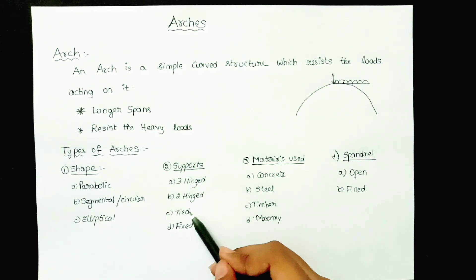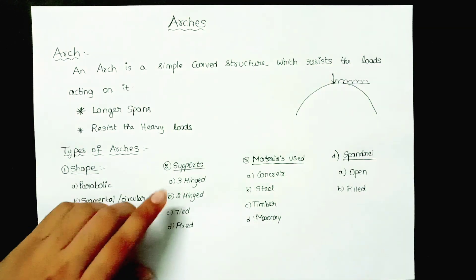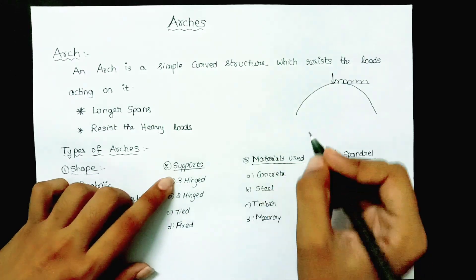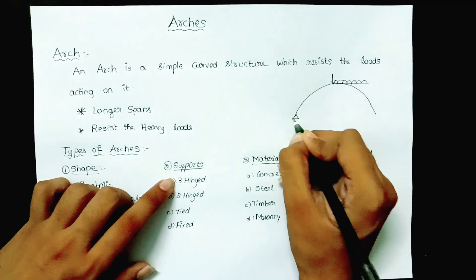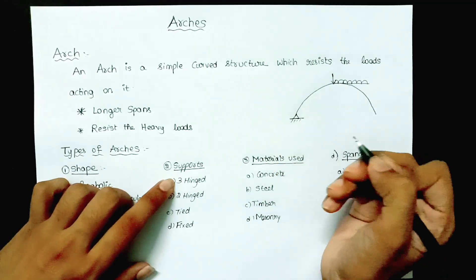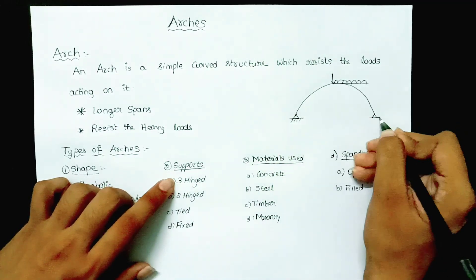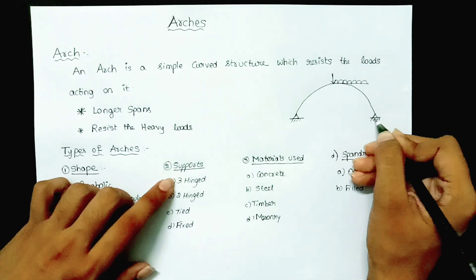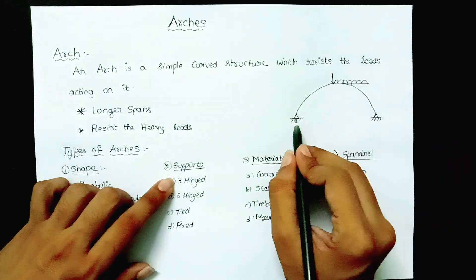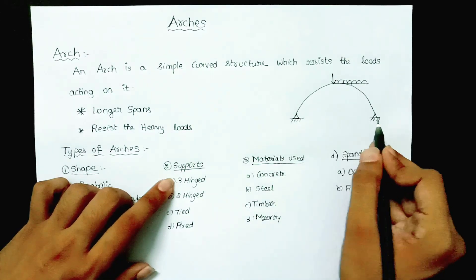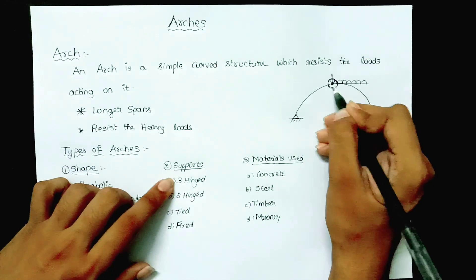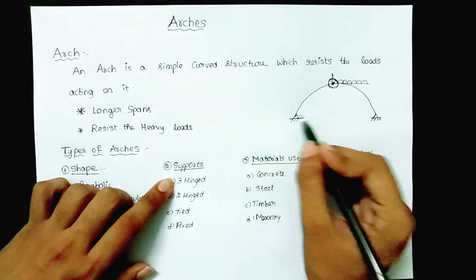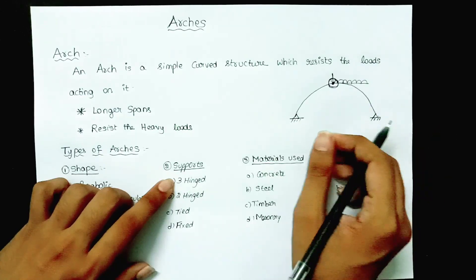Coming to classification based on supports, it may be three hinged, two hinged, tied, or fixed — explaining the support conditions. In a three hinged arch, there is one hinged support at one end, another hinged support at the other end, and an additional hinge somewhere along the arch, giving a total of three hinges.